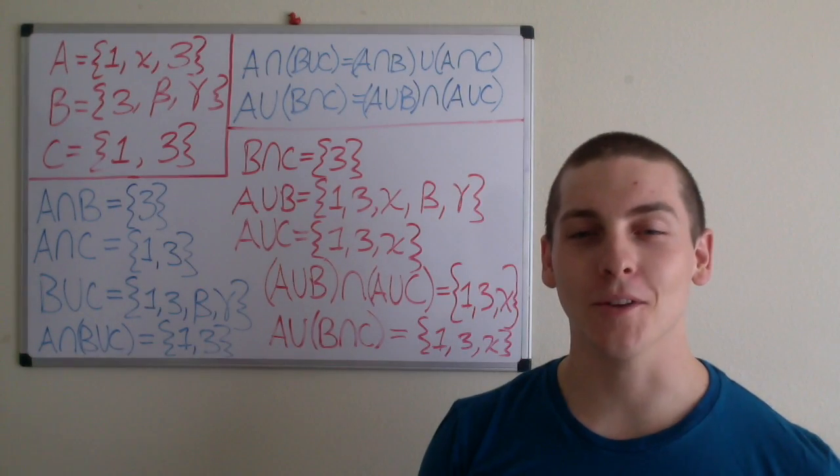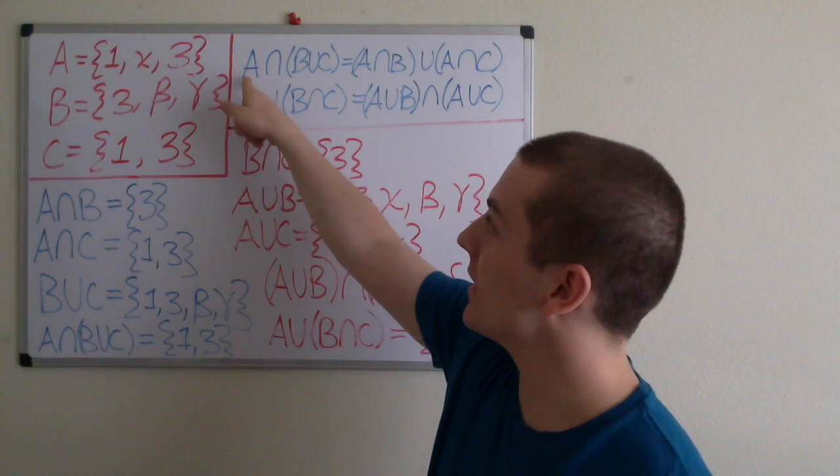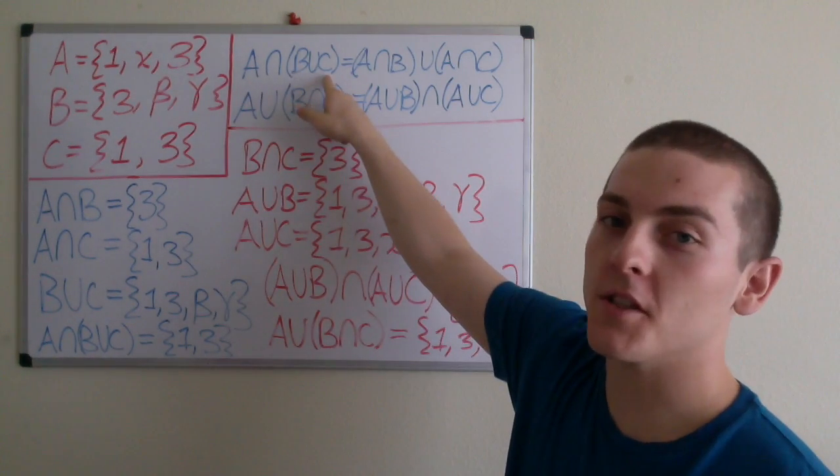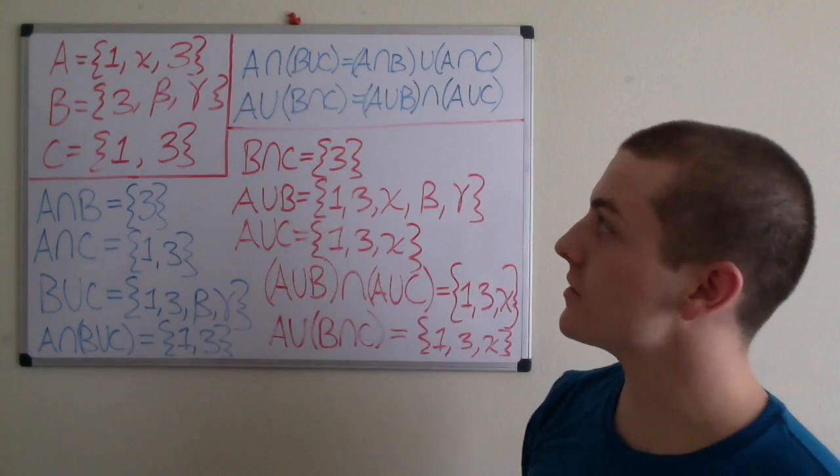In this video, I'll be going over an example of the distributive law. So if you look at A intersection B union C, that is supposed to equal A intersection B union A intersection C.